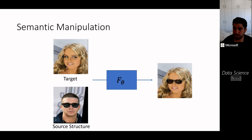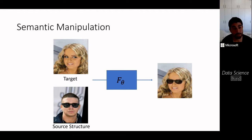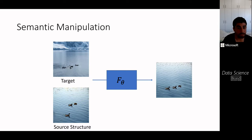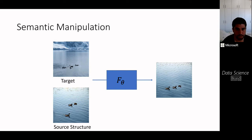Moving beyond style and texture transfer, we also want to adapt structure or semantic properties. For example, we might want to adapt a woman's face by adding glasses from a source image. This is more complicated because we not only need to understand the structure of objects like glasses, but also how to adapt them to the target image, which could have a different pose, illumination, and so on. Another example is generating an image analogous to a target, where the structure of objects is taken from the source image — we must understand how ducks look in order to transfer them.